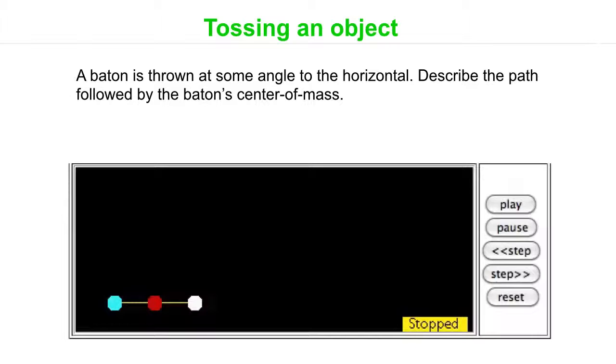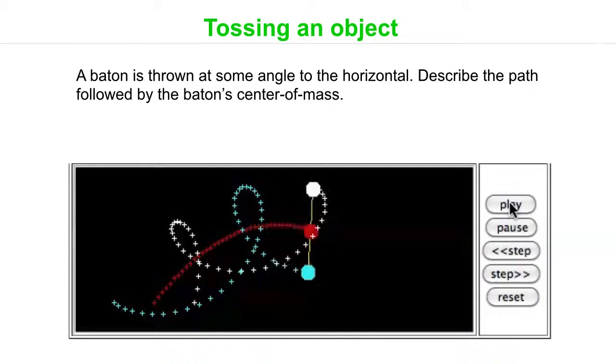Okay, so we'll demonstrate that here. So we've got this baton and we'll throw it at some angle to the horizontal. So we'll consider the path followed by the baton center of mass and the paths followed by the blue and the white balls that are stuck on the end. Okay, so we'll hit the play button there.